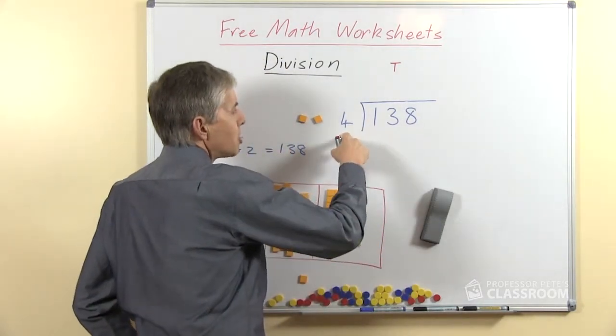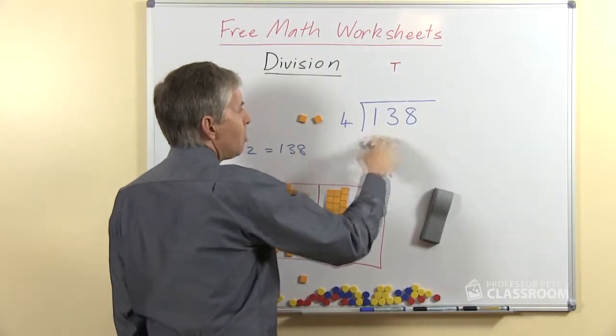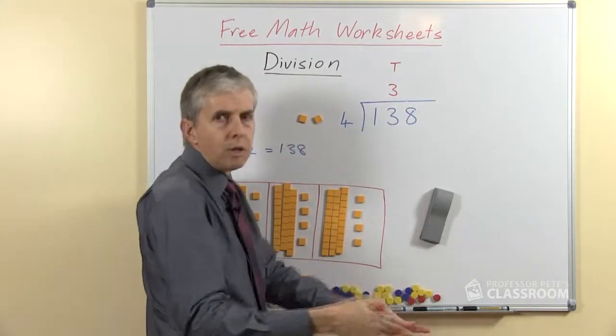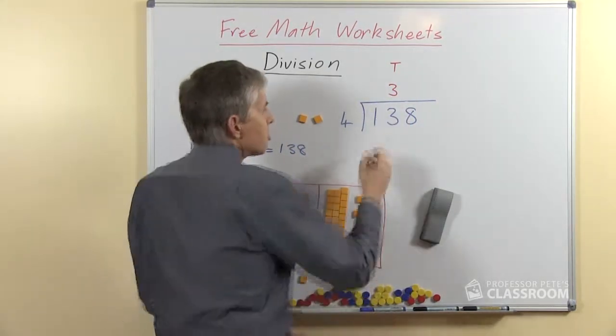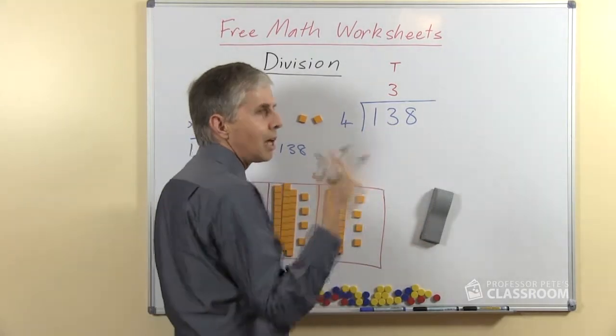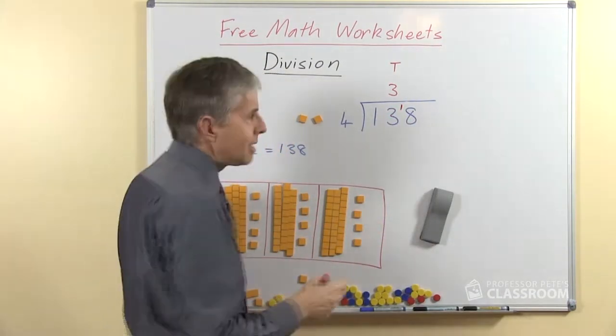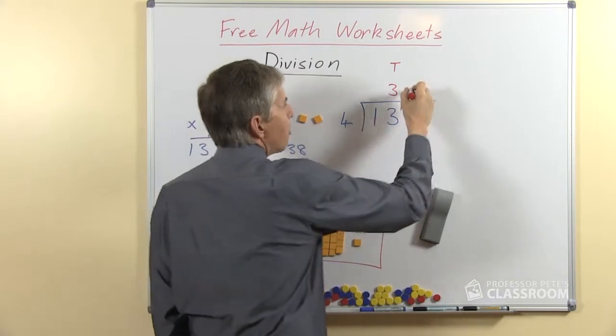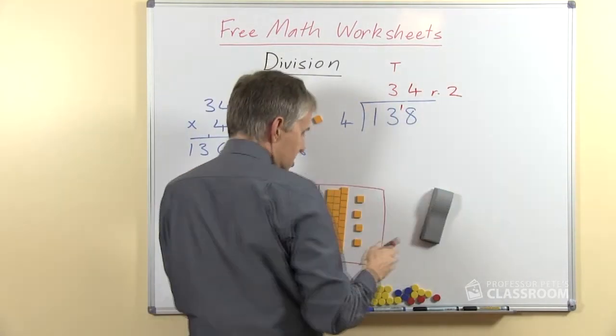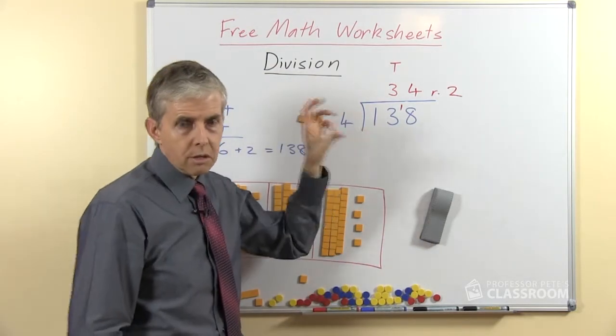So here we have 100 to share among 4. Can we do that? No. We've got 13 tens to share among 4. How many will each person get? They'll get 3. And how many do we share out? 3 fours are 12. We do this in our head. Take the 12 away from the 13. How many are left? 1 left. Put that next to the 8, we've now got 18 ones. Share 18 among 4, everybody gets 4. 4 fours are 16, there are 2 left. There's the remainder. So exactly the same steps, but of course it's shorter and quicker.